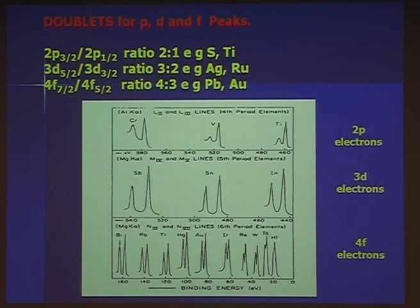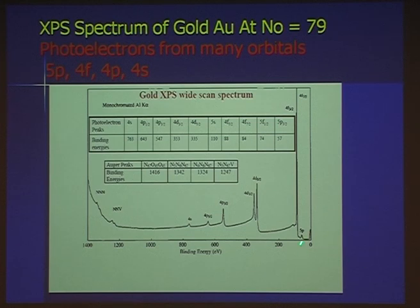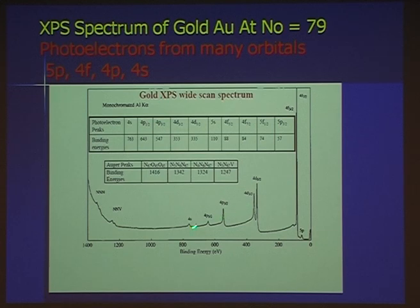That's how you identify what element you've got — not only the binding energy position, but you must also have the correct splitting ratio. You must have these two 3D peaks if you've got tin; you must have these two 4F peaks if you've got gold. Here's the spectrum of pure gold: no other element has a spectrum like this. The 4F electrons are split in the ratio 4:3; the 4D electrons split in the ratio 3:2; the 2P split in the ratio 2:1; and the 4S is not split.